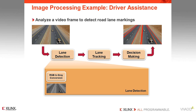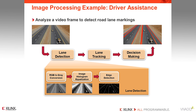In order to perform lane detection, we first need to convert the video image from RGB to gray format. After performing some image equalization, an edge detection algorithm is used to highlight the edges in the image, and finally a Hough transform is used to extract the features. Each of these steps can be performed using library functions from the OpenCV library, allowing complex video analysis algorithms to be quickly developed.